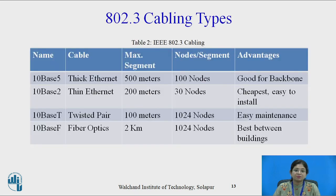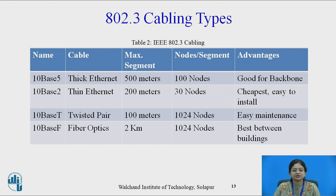This table shows the comparison of 802.3 cabling types. 10Base5 (Thick Ethernet) allows segments up to 500 meters with 100 nodes per segment, suitable for backbone use. 10Base2 (Thin Ethernet) has a 200-meter segment limit with 30 nodes per segment — the cheapest and easiest to install. 10BaseT (twisted pair) allows 100-meter segments with up to 1024 nodes per segment and is easy to maintain. 10BaseF (optical fiber) allows segments up to 2 kilometers with 1024 nodes per segment, providing excellent noise immunity and best use between buildings.